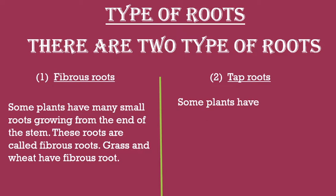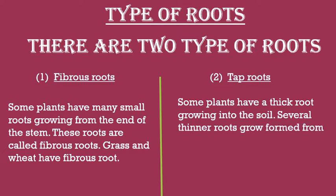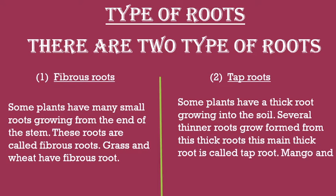The second type of root is tap root (tap root ko Hindi mein mool jad bhi kehte hain). Some plants have a thick root growing into the soil; several thinner roots grow from this thick root. This main thick root is called tap root. Mango and neem trees have this type of root. (Aam aur neem ke paudhon mein is tarah ki jad hoti hai.)